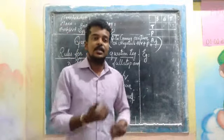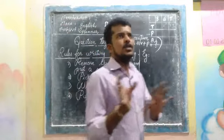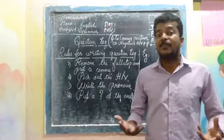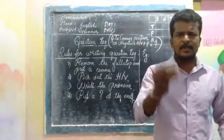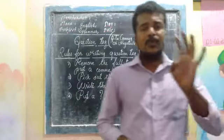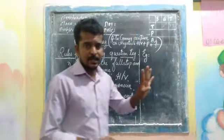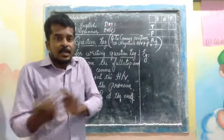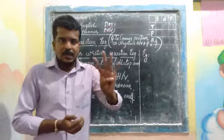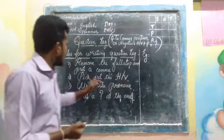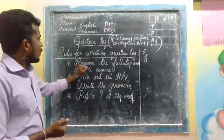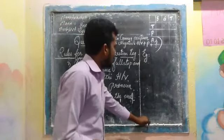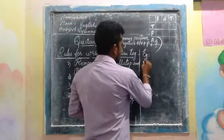Most students might be thinking: how can I make the tag for a statement? It is very simple. There are four rules for writing a question tag. The first rule: remove the full stop and put a comma.